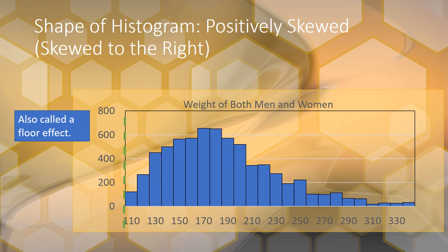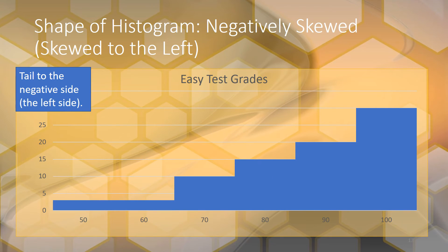A positively skewed histogram is also called a floor effect. There's a line that cuts off the histogram, meaning there are no values that can go below that line — like a floor. It's called a floor effect because it involves low numbers, and the data can't get past that floor, so there are no values below it.